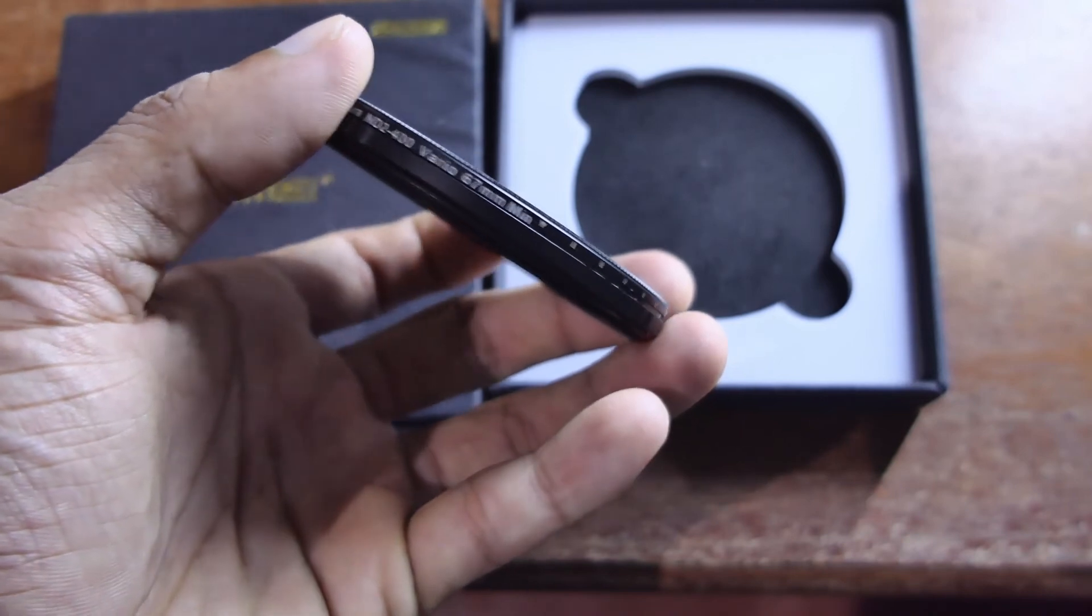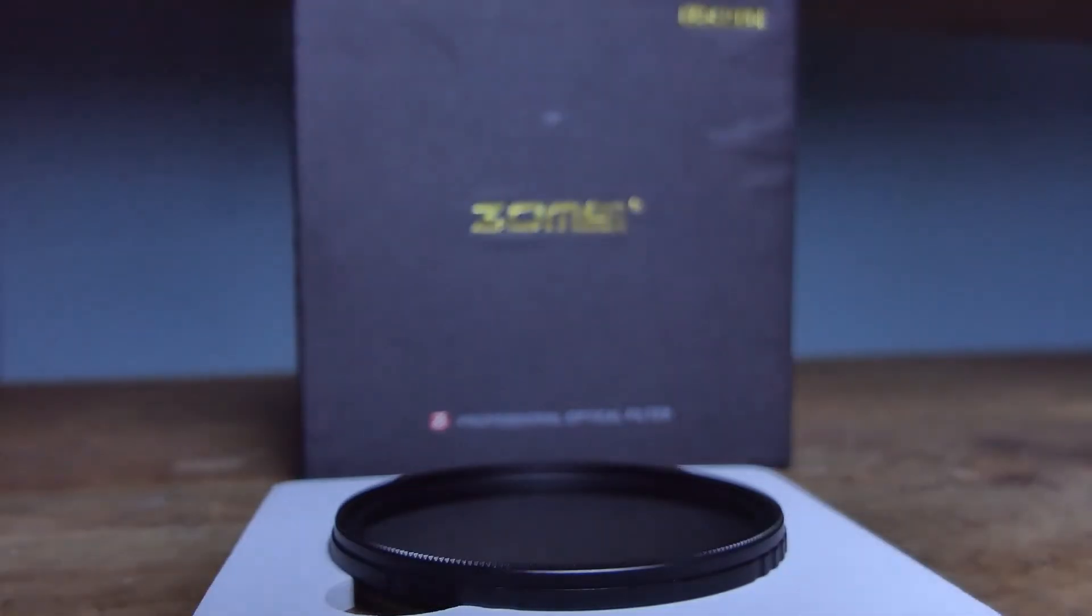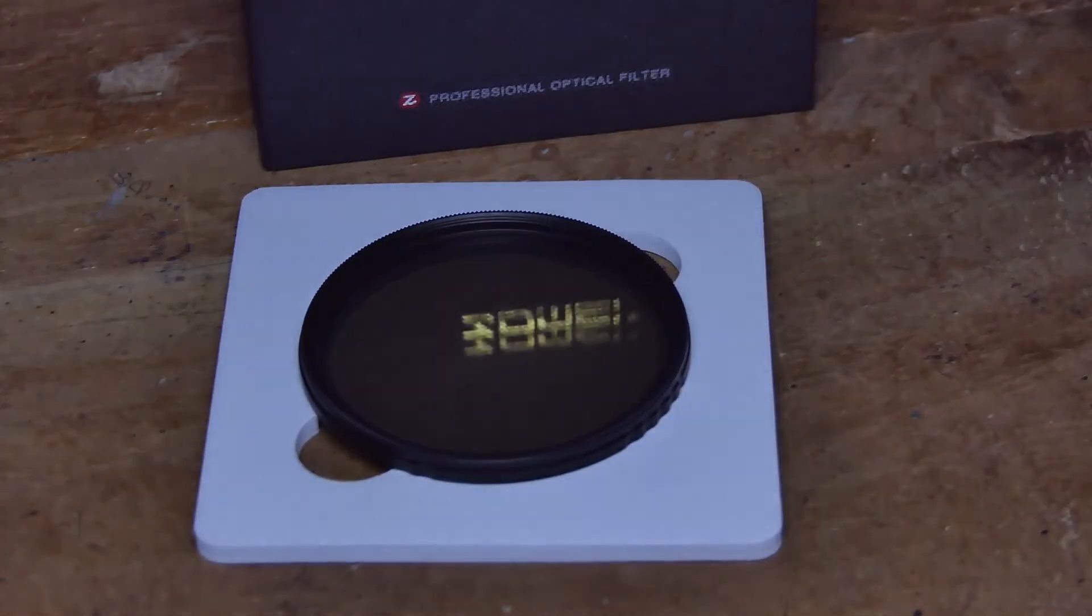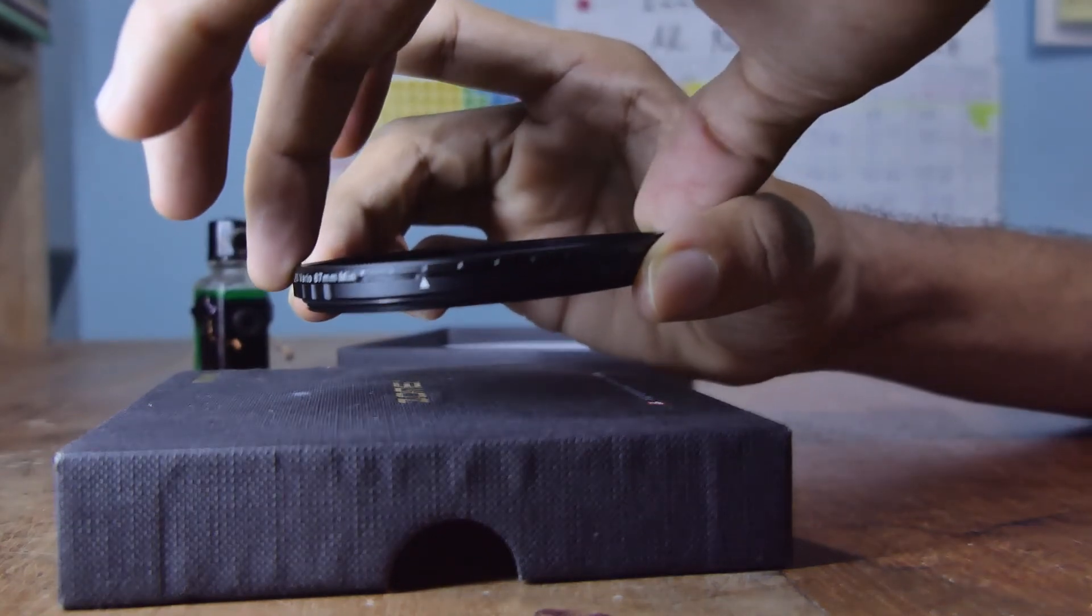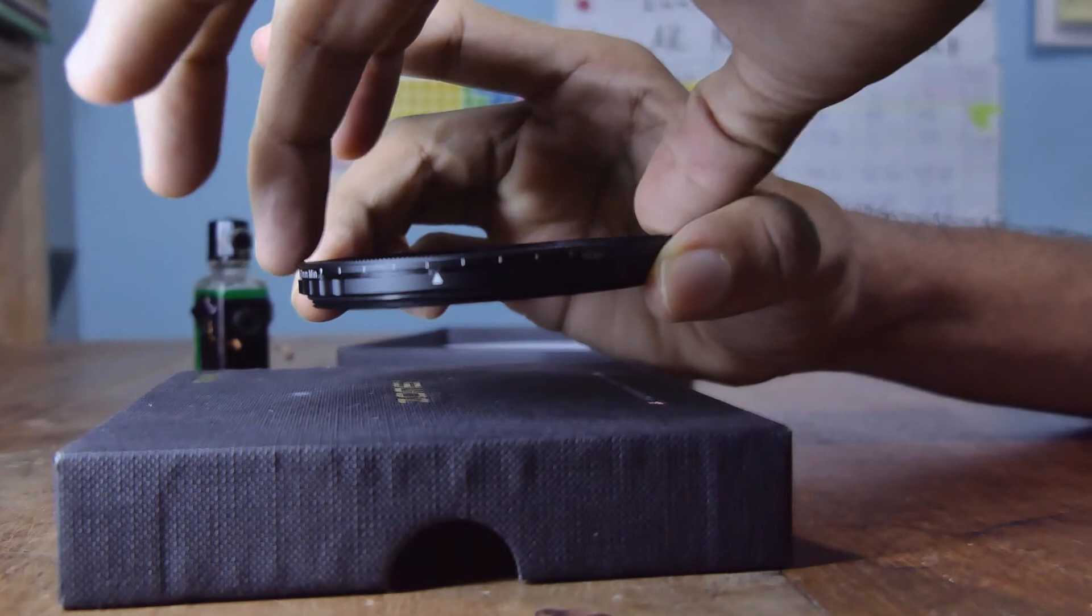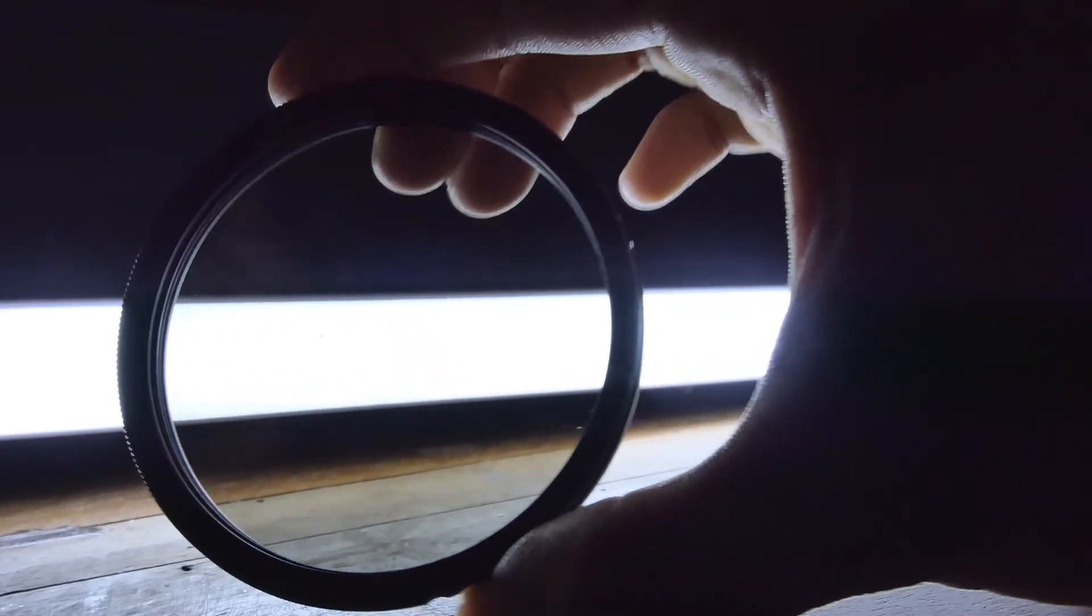As for me, I'm using a variable ND filter by Zona, and it is ND 2 to 401. When it comes to VNDs, most people say that they are useless since they give an X pattern when it hits the max. But this guy is great since this one has a limit and it stops the rotation when it hits the max, and importantly, there's no X pattern.